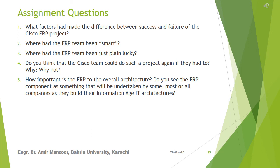Following are some assignment questions. After an in-depth analysis of the case, you should be able to answer all these questions. 1. What factors had made the difference between success and failure of the Cisco ERP project? 2. Where had the ERP team been smart? 3. Where had the ERP team been just plain lucky? 4. Do you think that the Cisco team could do such a project again if they had to? Why or why not? 5. How important is ERP to the overall architecture? Do you see the ERP component as something that will be undertaken by some, most, or all companies as they build their information-age IT architectures?